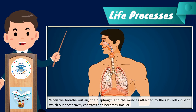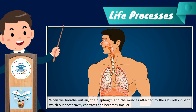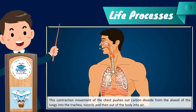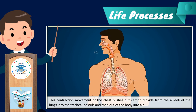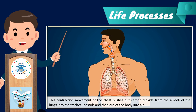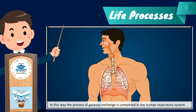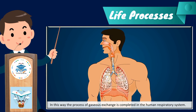When we breathe out, the diaphragm and the muscles attached to the ribs relax, causing the chest cavity to contract and become smaller. This contraction pushes carbon dioxide out from the alveoli of the lungs, through the trachea and nostrils, and out of the body. In this way, the process of gas exchange is completed in the human respiratory system.